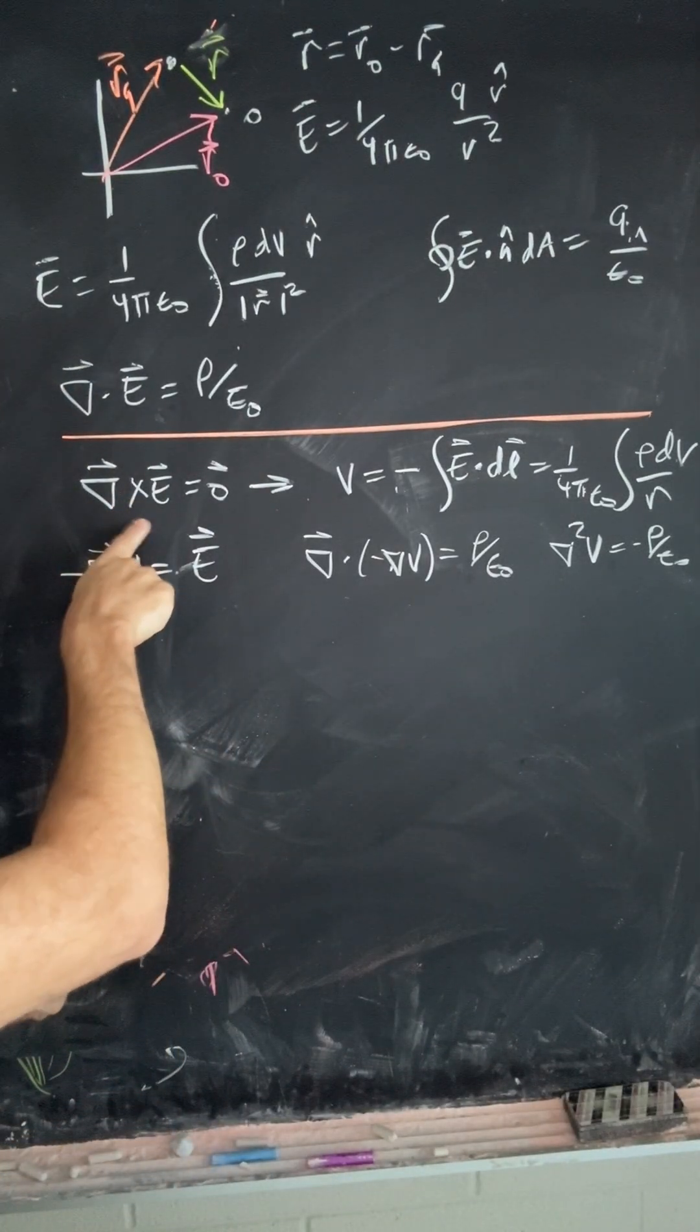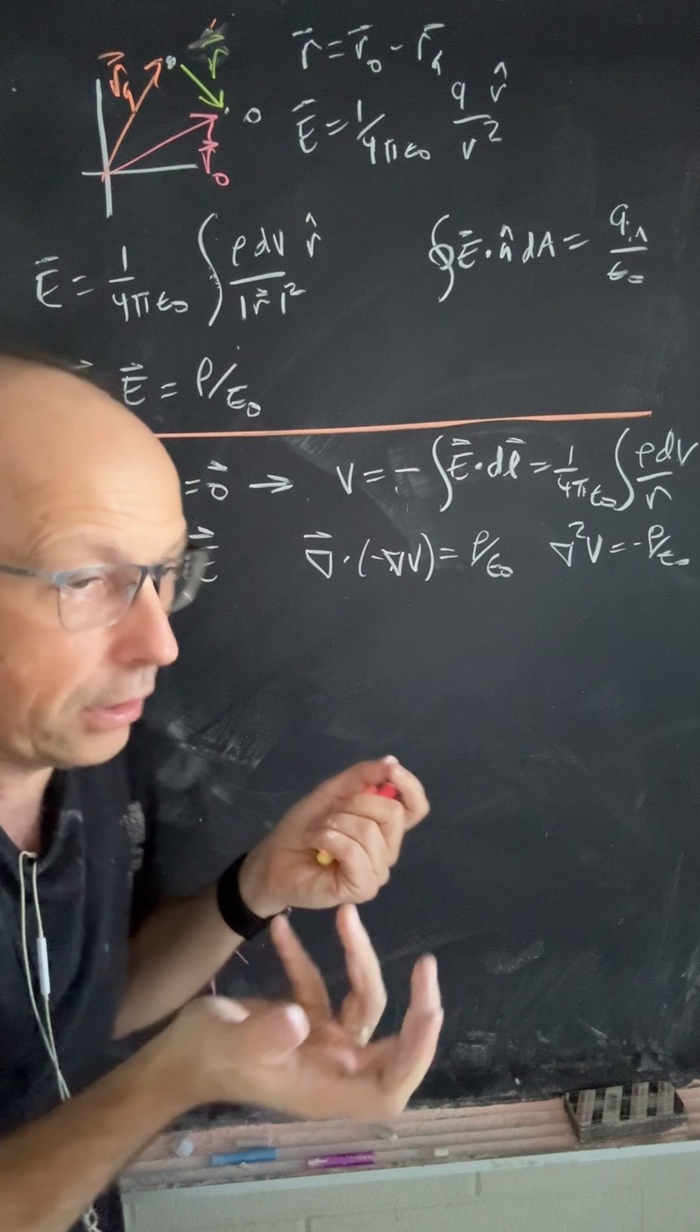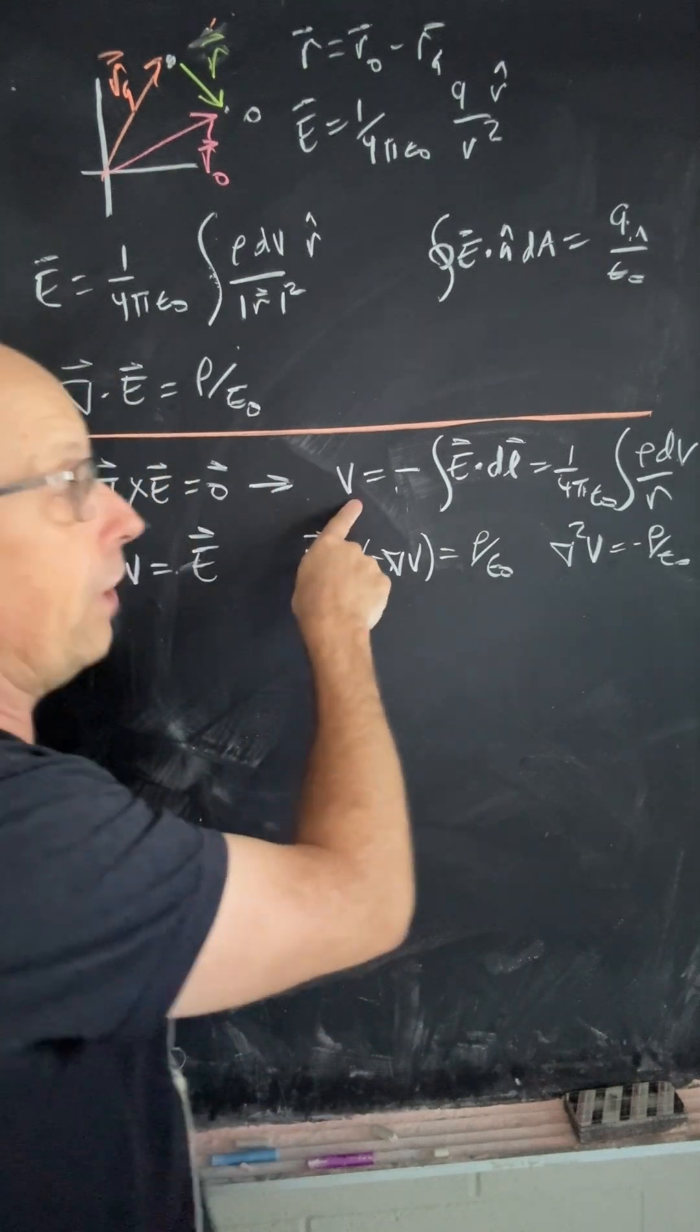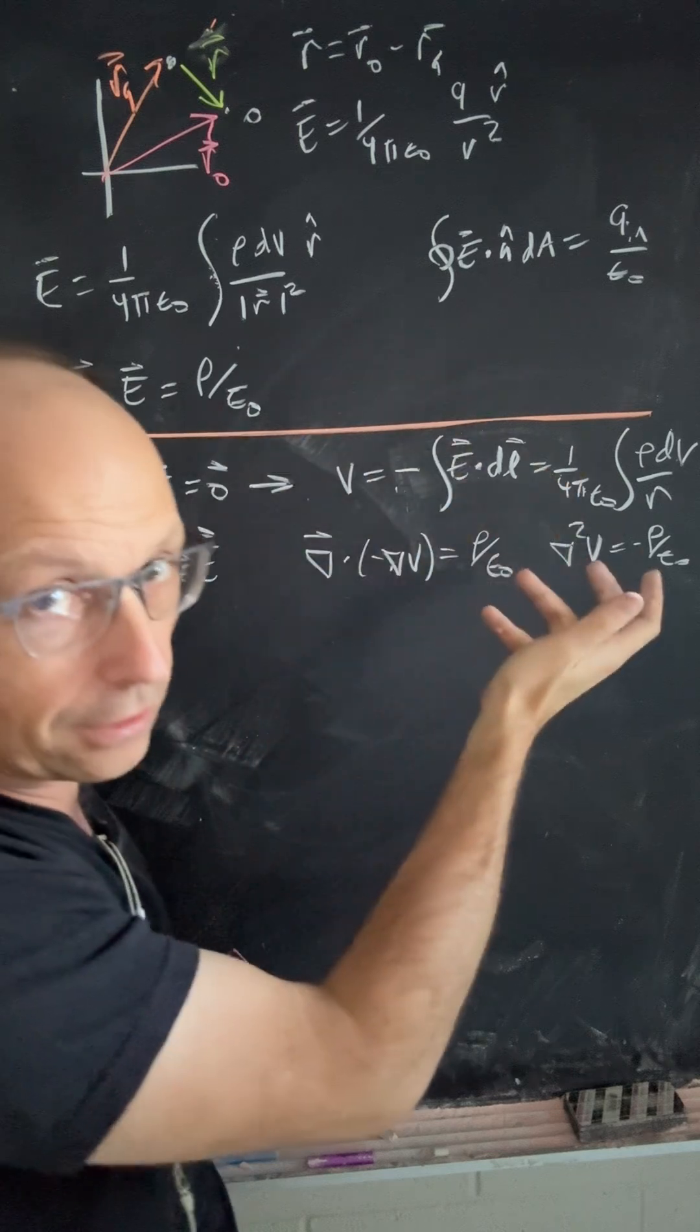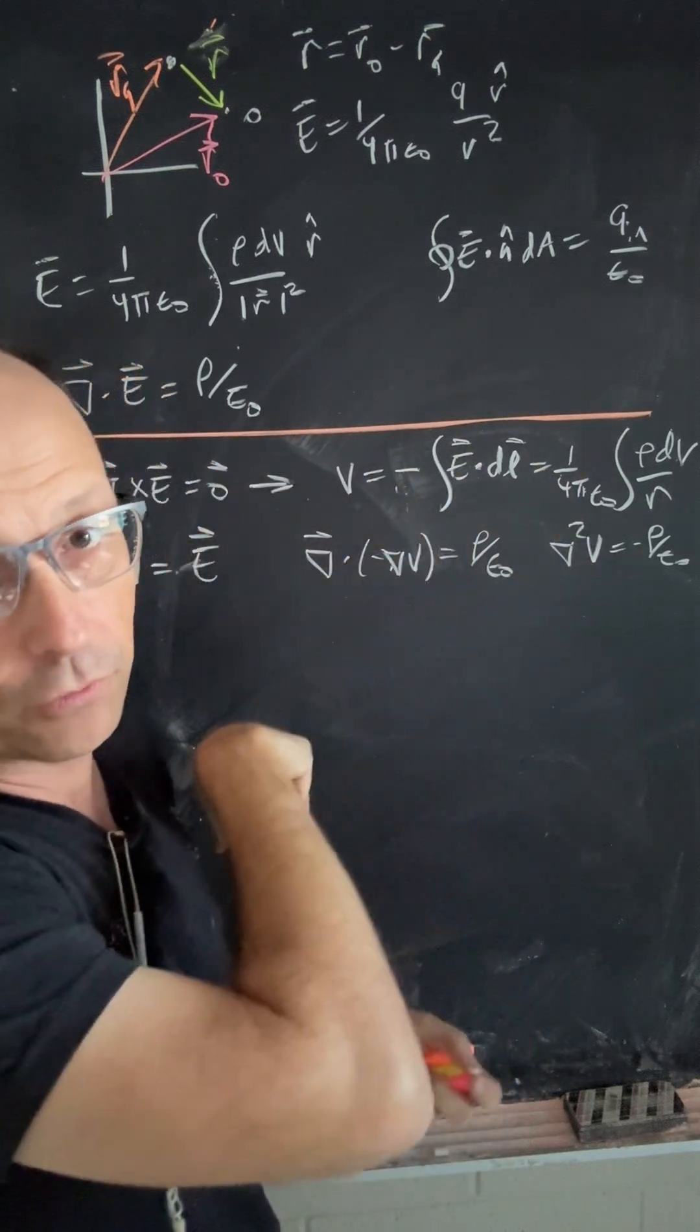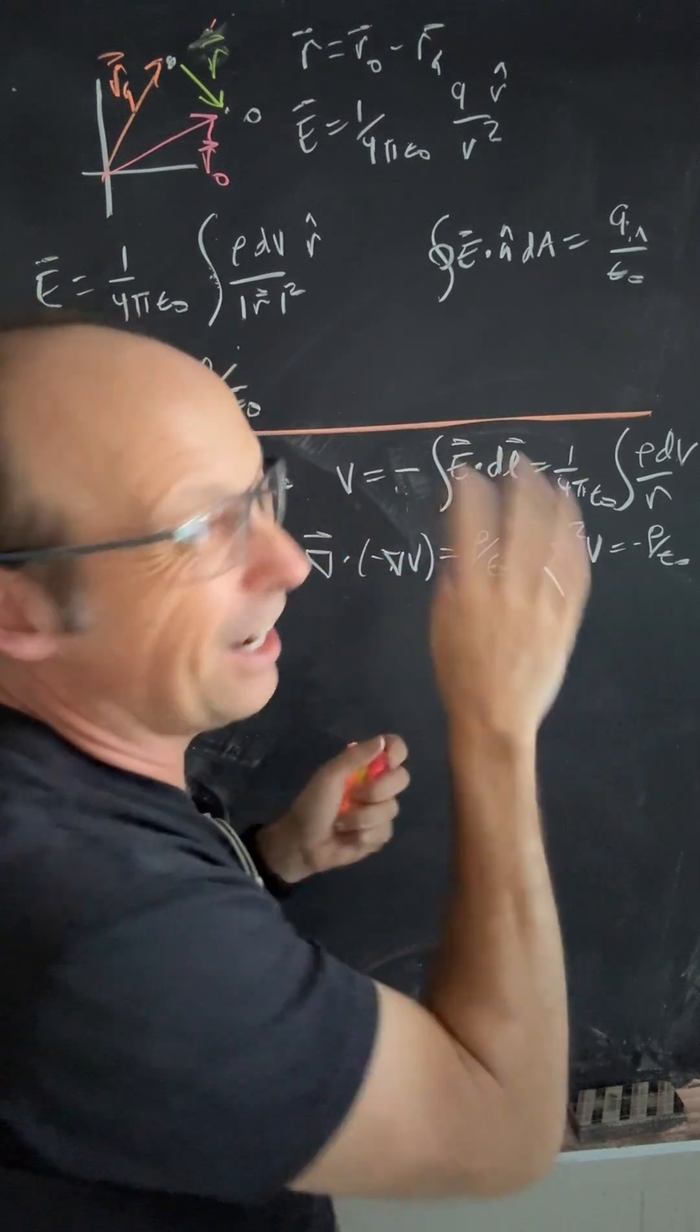This is the curl of the electric field. Zero meaning it's not curly at all. So from that, we can define electric potential as negative the integral of E dot DL. It's a path integral of electric field. The negative comes from the definition of work, and it makes things easier.